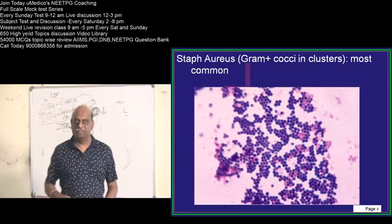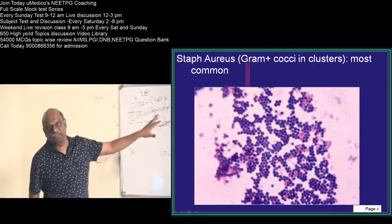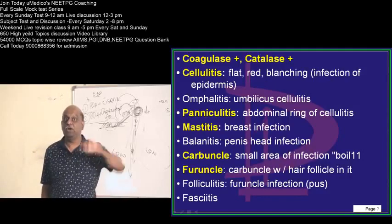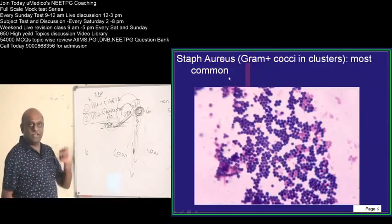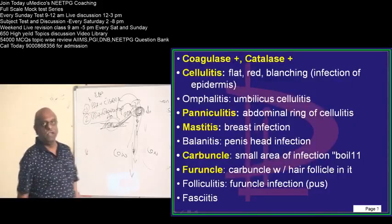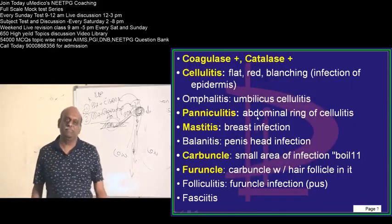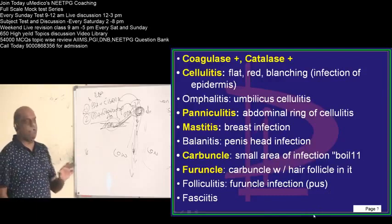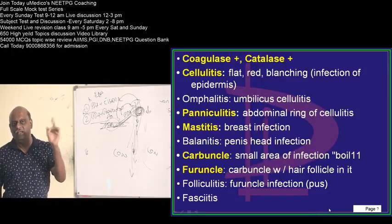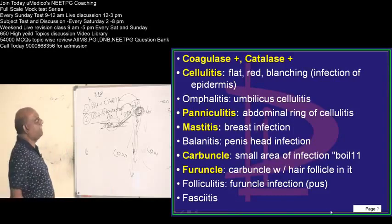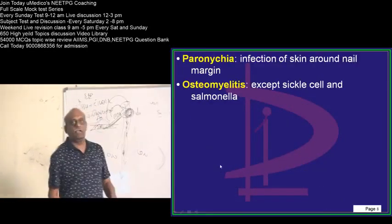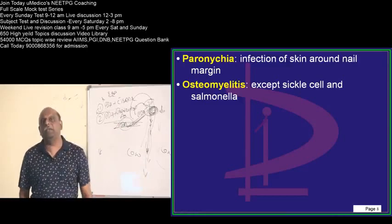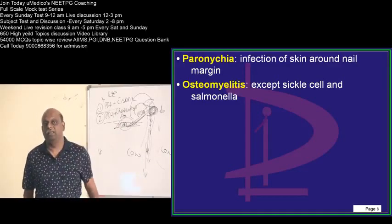Staph aureus — gram-positive cocci in clusters — is the classical appearance. It is coagulase positive and also catalase positive — that is staphylococcus aureus. It leads to cellulitis, panniculitis, mastitis, balanitis, carbuncle, furuncle, folliculitis, fasciitis — all soft tissue infections. Just think staphylococcus aureus. Similarly, paronychia and osteomyelitis — most common cause of osteomyelitis is staphylococcus, except in sickle cell anemia patients where salmonella is very common.